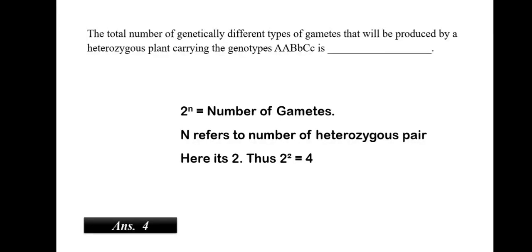The total number of genetically different types of gametes that will be produced by a heterozygous plant carrying the genotype AABbCc is. Now, we should know the formula 2 to the power n is equal to number of gametes where n is the number of heterozygous pairs. Here, B and C are heterozygous pairs. Thus, we have 2 heterozygous pairs. So, 2 to the power 2 which is equal to 4. So, the answer would be 4.